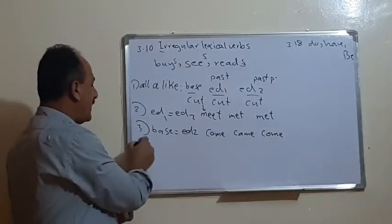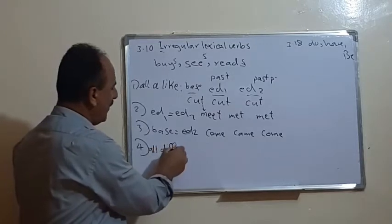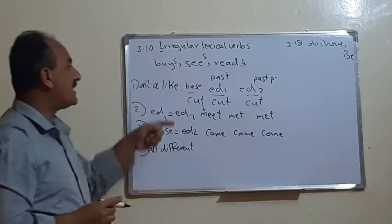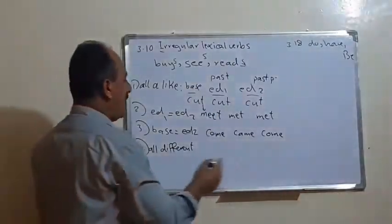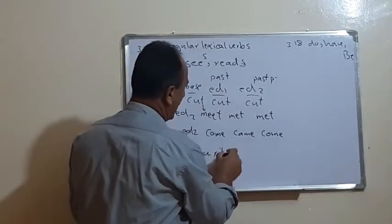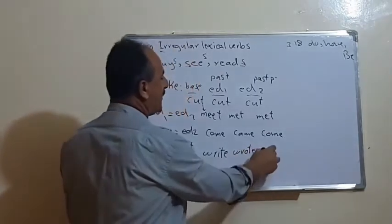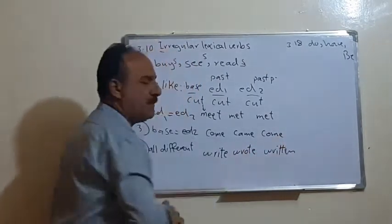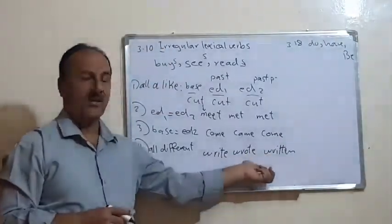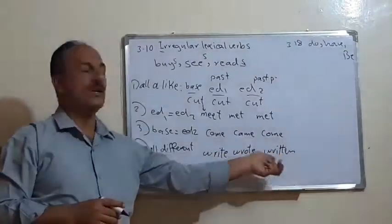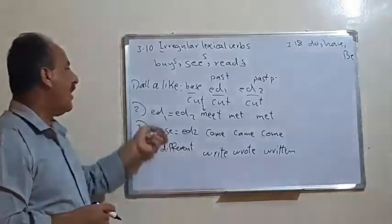Finally, Group 4 is when all forms are different — the base, ed1, and ed2 are all different. For example, the verb 'write': the past is 'wrote' and the past participle is 'written'. For 'speak': spoke, spoken. For 'drink': drank, drunk. The majority of irregular lexical verbs belong to this category.